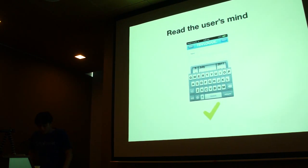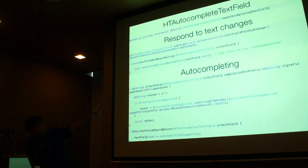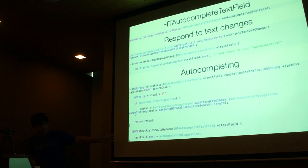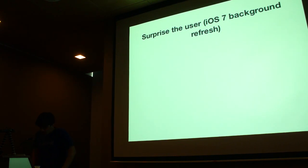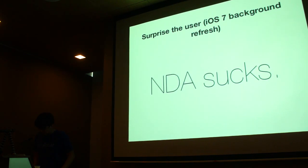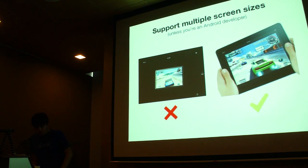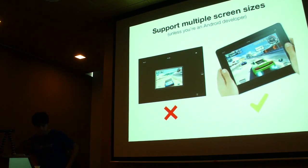Read the user's mind. As you can see here, it's an autocomplete text field. HD Autocomplete Text Field is an open source project on GitHub, and you can set it up to respond to text changes and give an autocompletion based on what the user typed in. With iOS 7, they announced a new API called Background Refresh — it basically figures out when the user uses your app and schedules periods where it can reload the data. Also, support multiple screen sizes. If a user has an iPhone and an iPad both logged in and using them at different times, make sure to support both screen sizes. I think the user will really appreciate that.